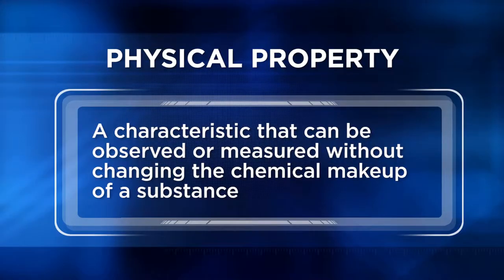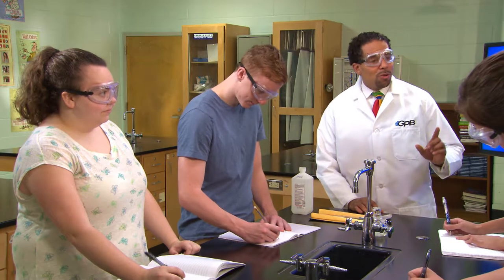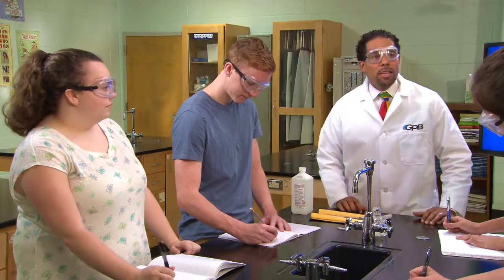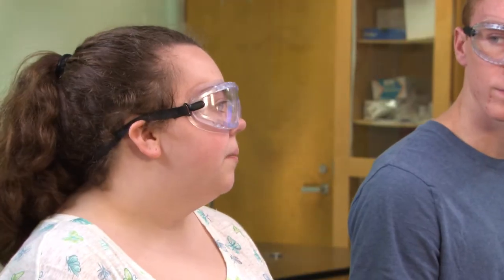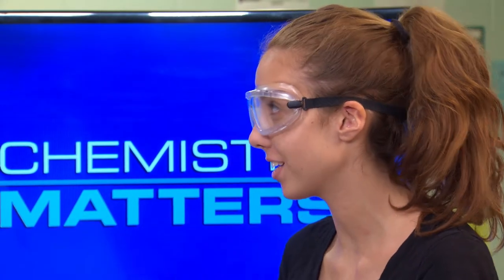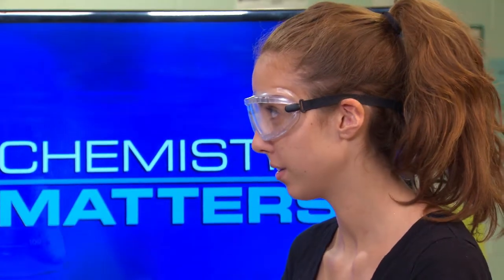Does anyone remember the definition of physical property? A physical property is a characteristic that can be observed or measured without changing the chemical makeup of a substance. Can anyone compare and contrast physical properties and chemical properties? Both of them are changes we can see and measure, but chemical properties can only be seen if what you're observing is a chemical reaction. That's right. So what do you think are some chemical properties?